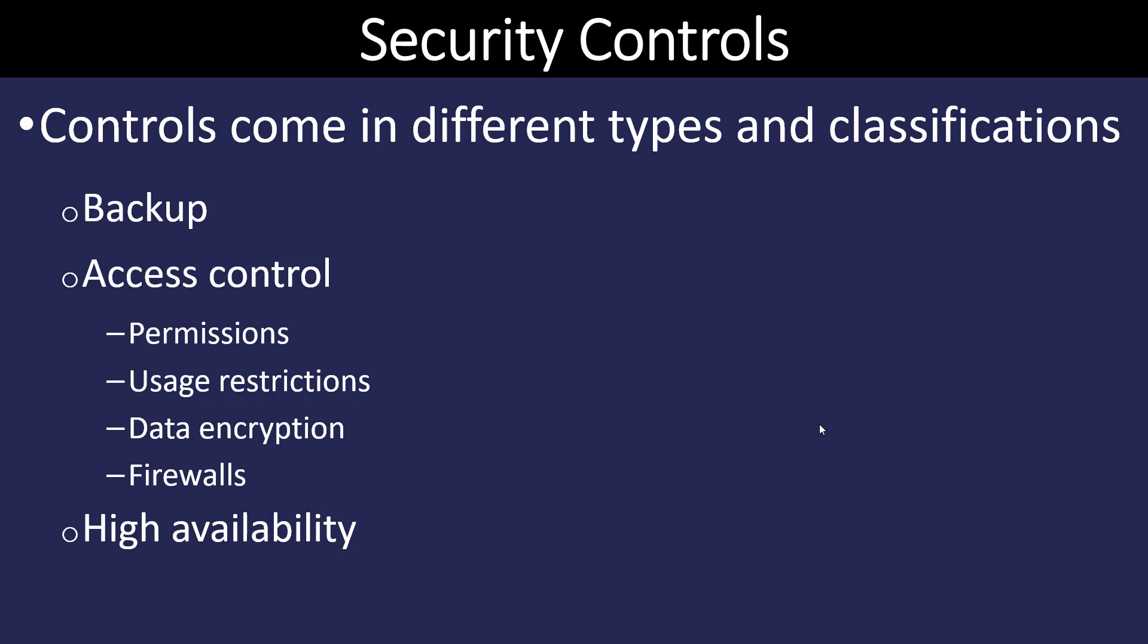Then, to protect the data, we're going to control who has access to it through permissions, usage restriction, the use of encryption, and the use of firewalls. And lastly, we want to make sure our network is robust enough so that our data has high availability to those people that need to use it.